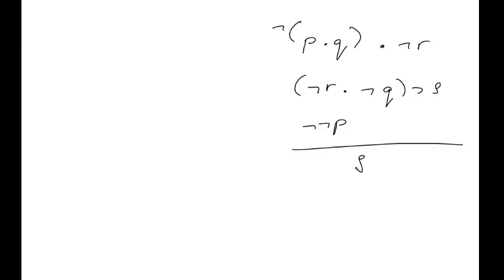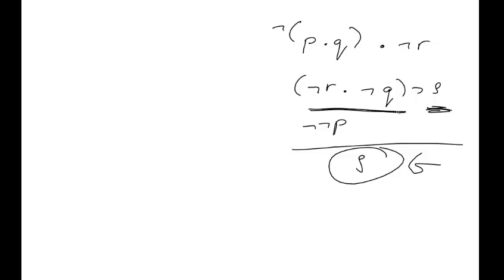Let's take a look at this one — a somewhat challenging one. You're trying to prove s. To get s you'd need this conditional, which requires ¬r ∧ ¬q. There's no direct instance of that conjunction, but De Morgan might help us out, and we've got some assistance in the premises.